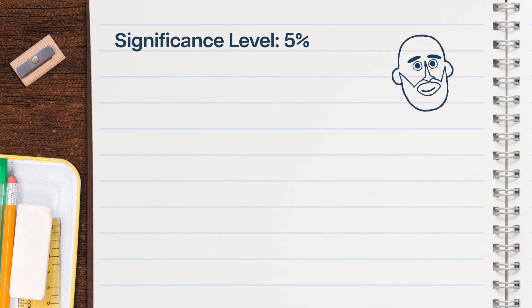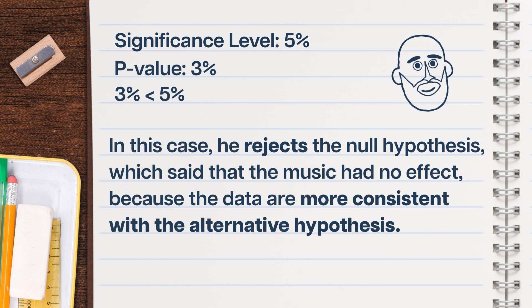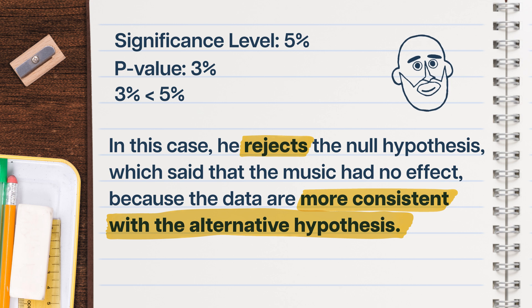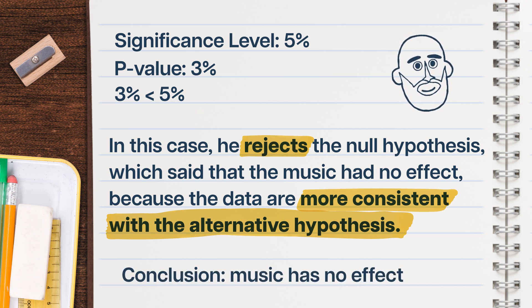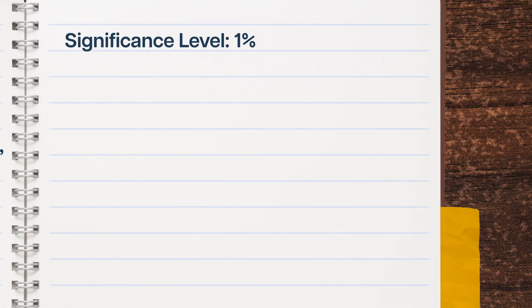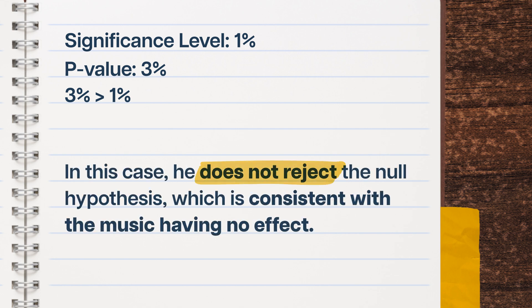Let's say Jonas opts for a 5% significance level, and after calculating his statistical test, he gets a p-value of 3%. That's less than his significance level, so he rejects the null hypothesis — which said that the music had no effect — because the data are more consistent with the alternative hypothesis. That means there's enough evidence to say that the music has an effect. But suppose Jonas instead opted for a 1% significance level and with the same data still got a p-value of 3%. That p-value is greater than his significance level, so he does not reject the null hypothesis. Does that mean he accepts it? Wrong! He simply fails to reject it. When the data are more consistent with the null hypothesis, we say that we do not have enough evidence to conclude that the alternative hypothesis is true.